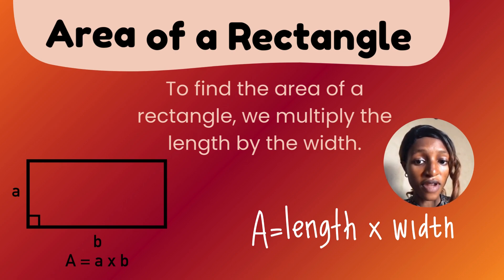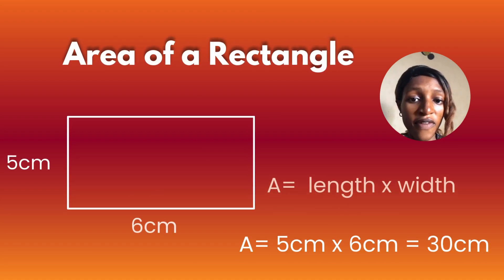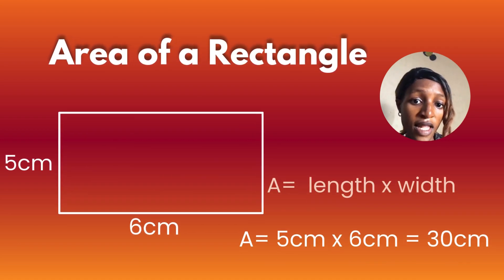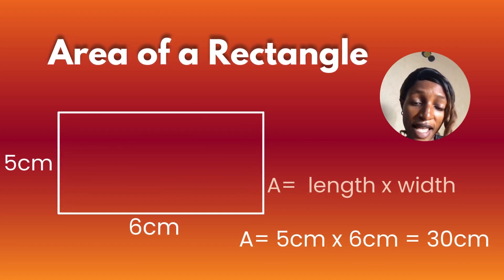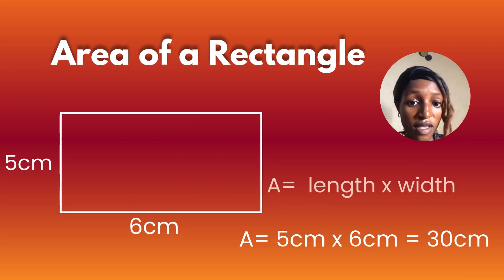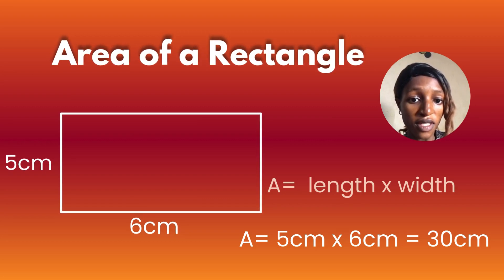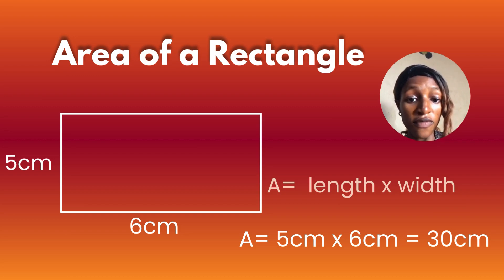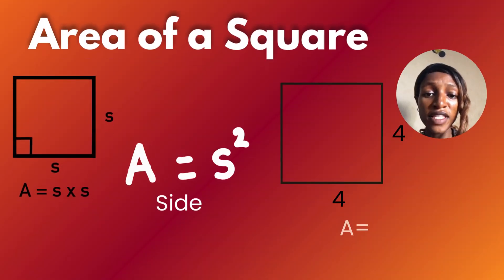Finding the area of a rectangle: length times width. We have five centimeters for the length and six centimeters for the width. Multiplied together, they give us 30 square centimeters — that's the area of this rectangular shape.